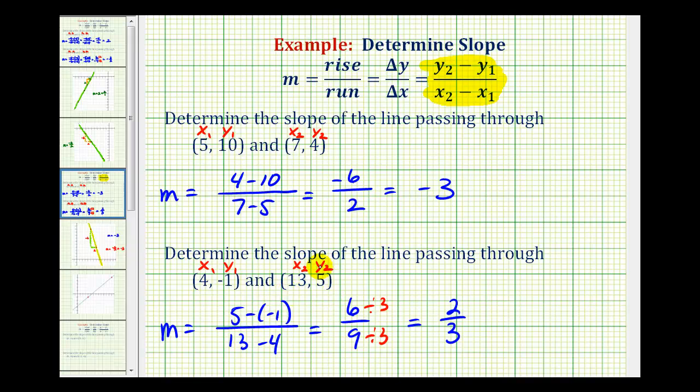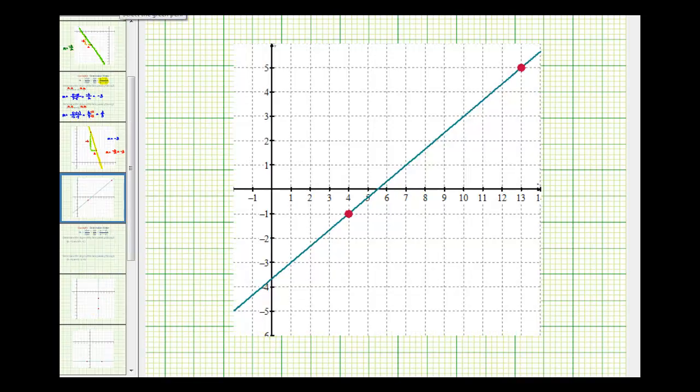Let's take a look at this line as well. We said the slope was equal to 2 thirds. Let's see what the ratio of the vertical change to horizontal change would be, moving from this point to this point. Notice how we'd have to go up 6 units, and then right 9 units. So the vertical change was positive 6, and the horizontal change was positive 9.